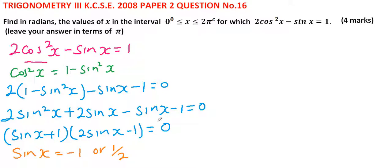Those are the factors of our quadratic equation. For sinx = -1, the angle is 270°.